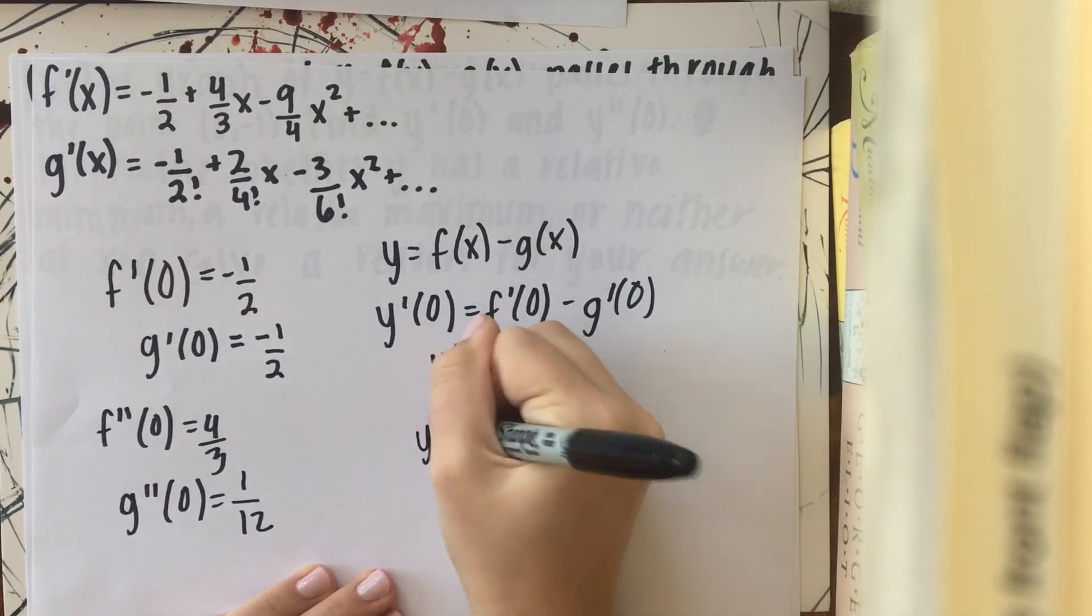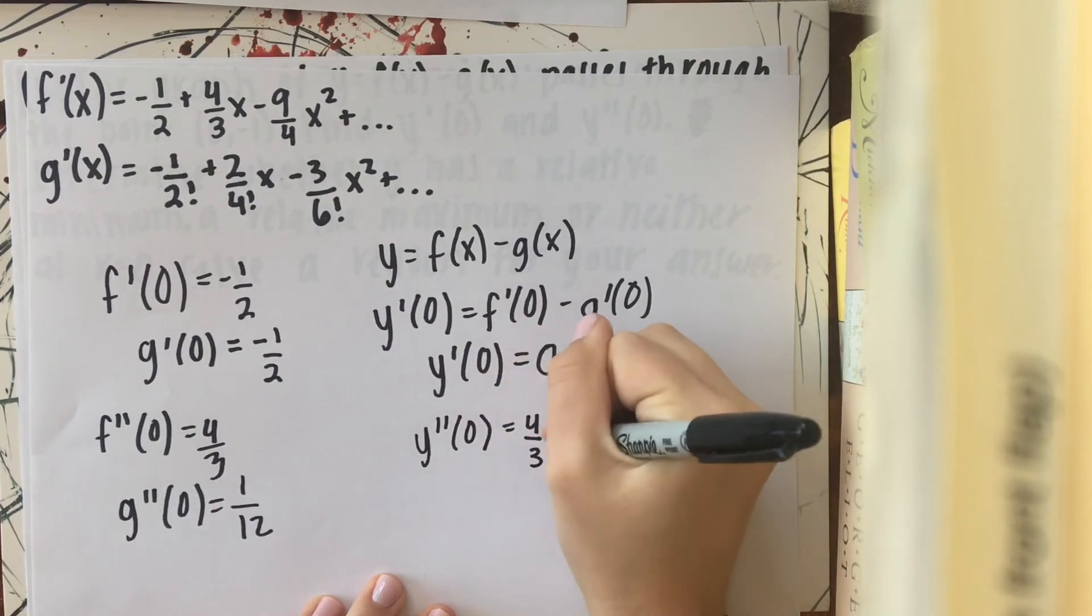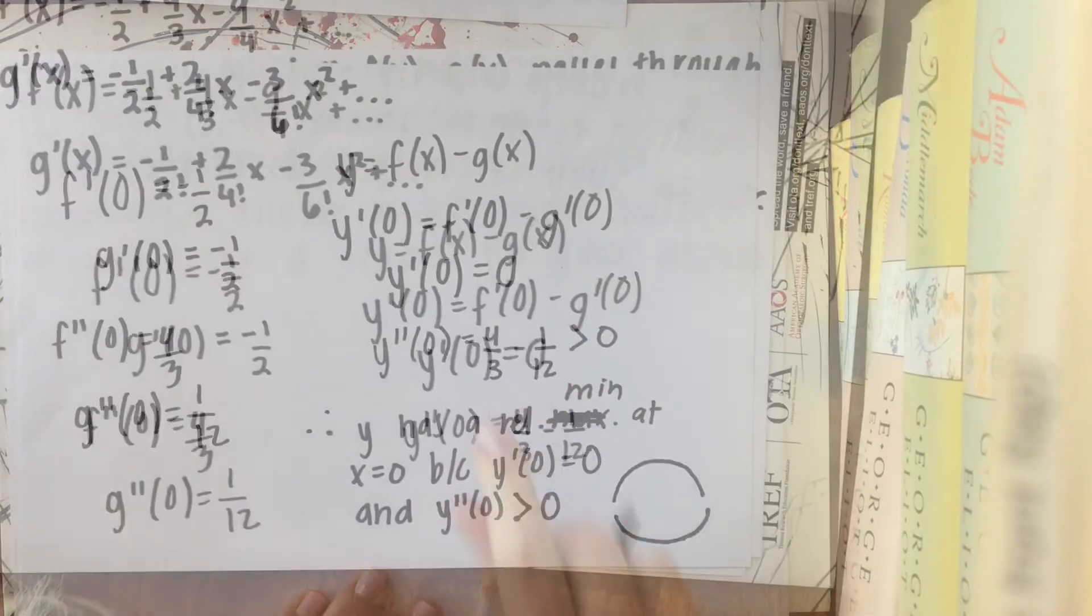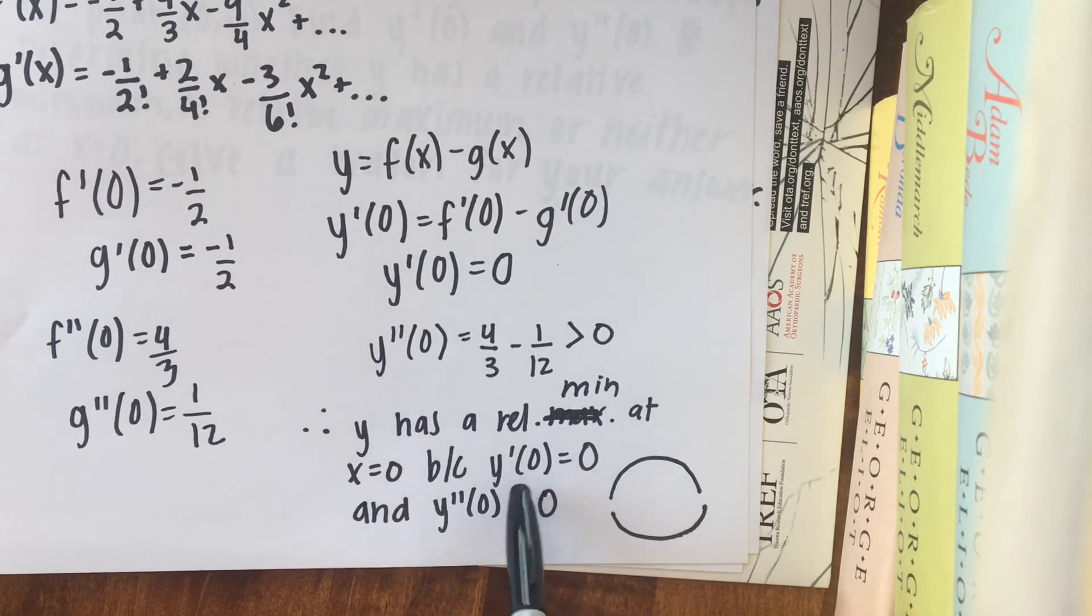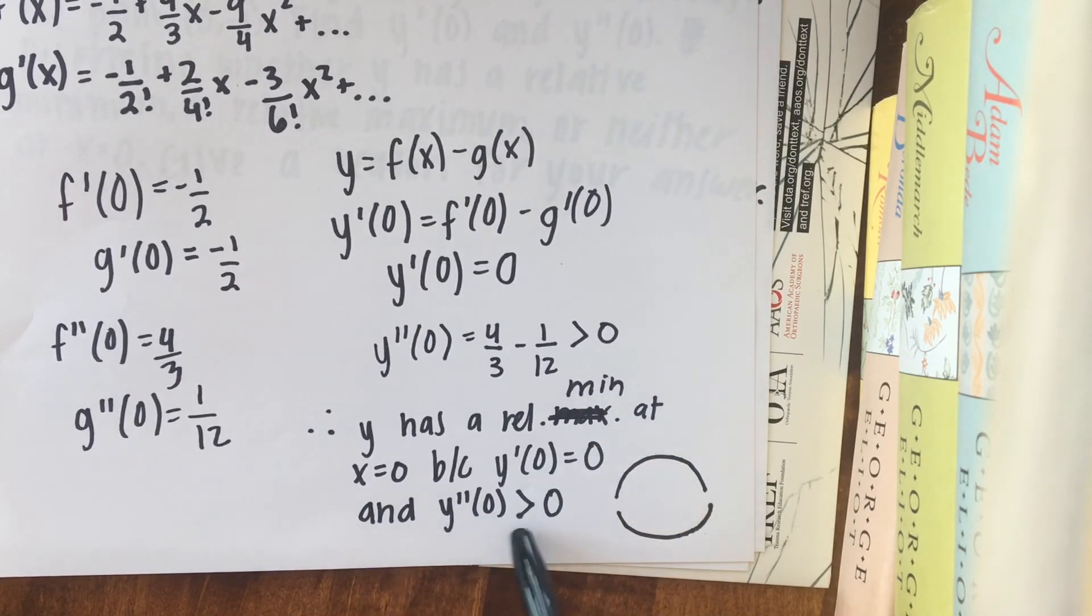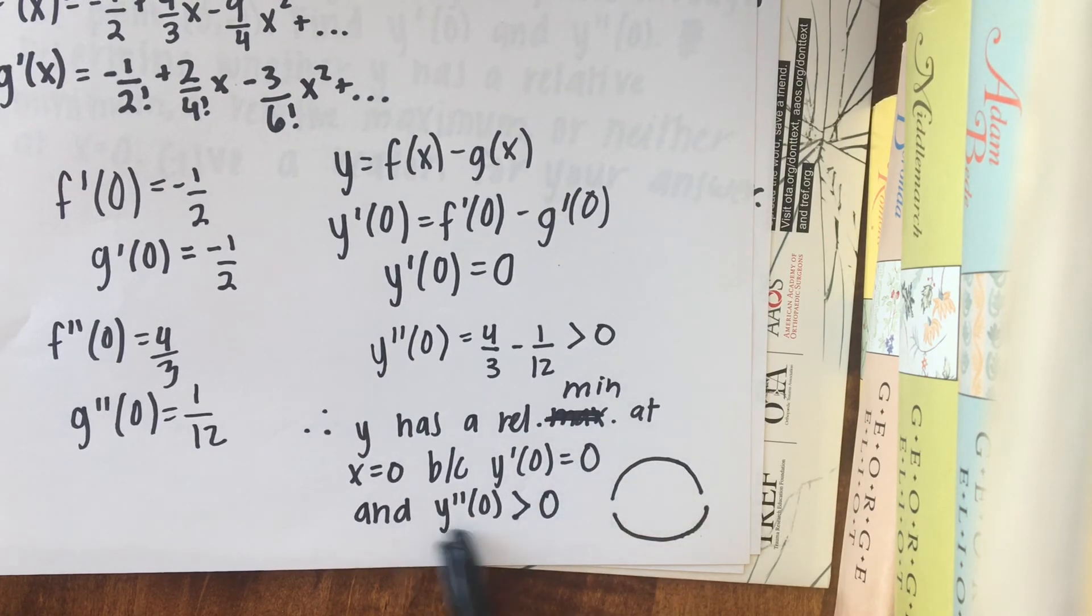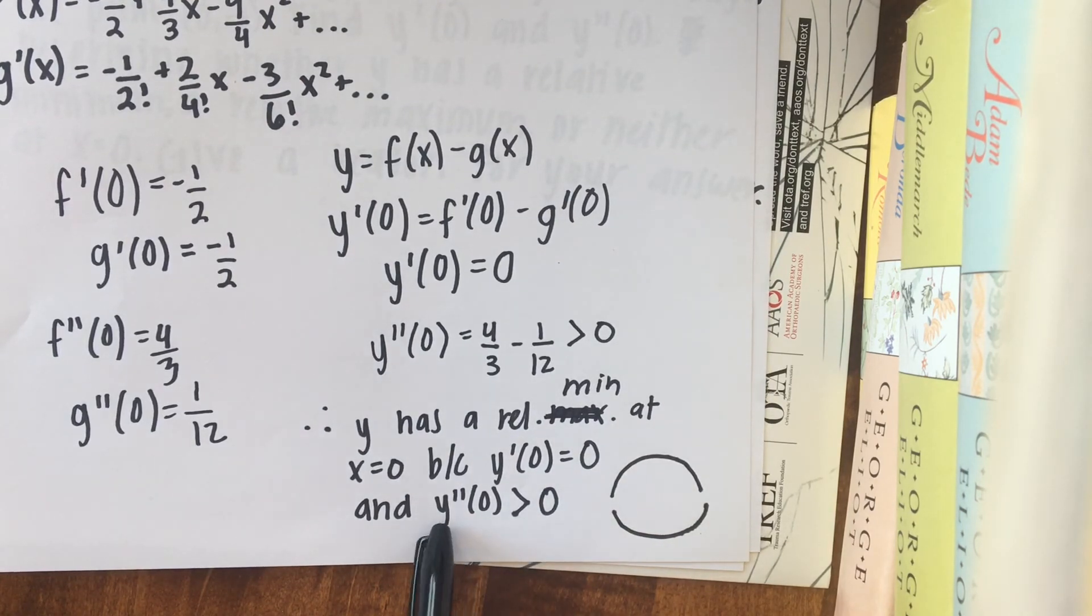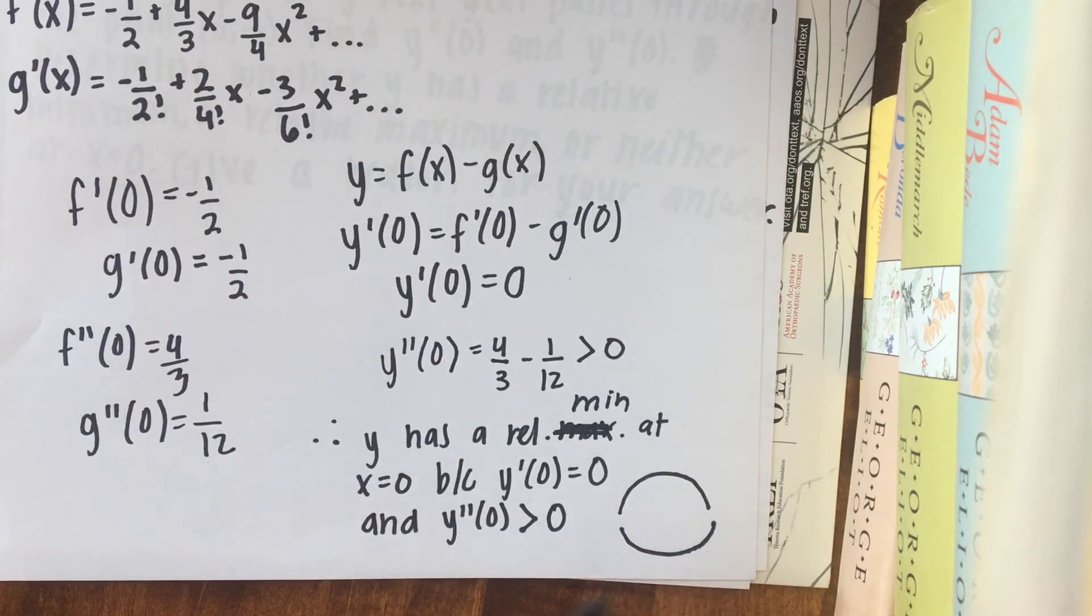And so then in that case, y double prime of 0 is going to equal 4 thirds minus 1 twelfth. And now we can see that y is going to have a relative minimum at x equals 0 because y prime of 0 equals 0 and y double prime of 0 is greater than 0. And the reason why that would procure a relative minimum is because the slope of the equation is at 0 at this point. And it is going to be concave up as given by the fact that the second derivative is greater than 0. So it's going to be concave up like that. So that would therefore procure a minimum.